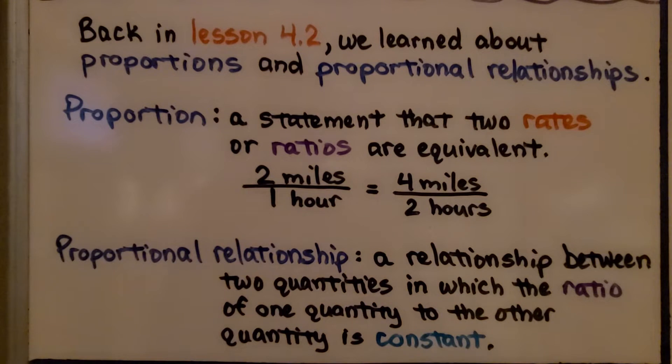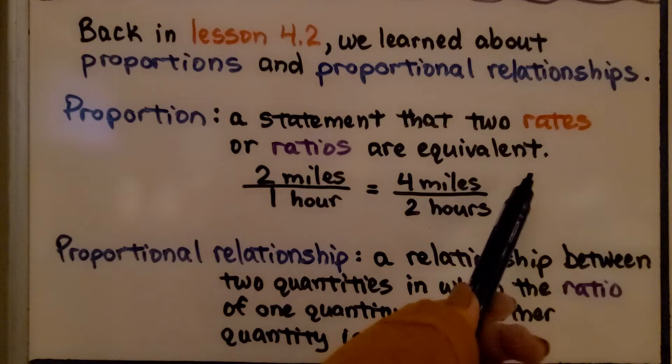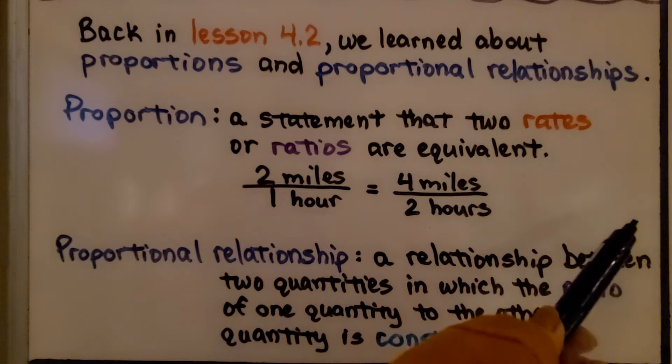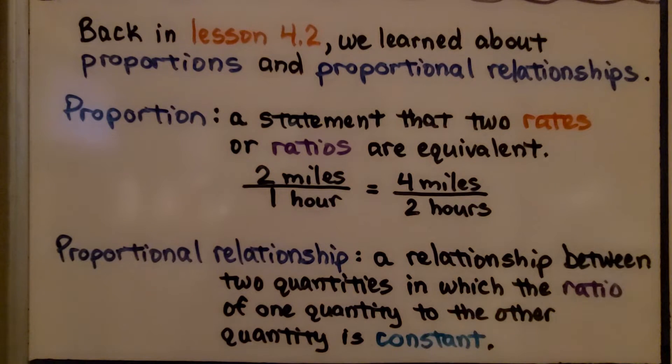A proportional relationship is a relationship between two quantities in which the ratio of one quantity to the other quantity is constant. We could say there's six miles in three hours, and eight miles in four hours, and we could continue on.